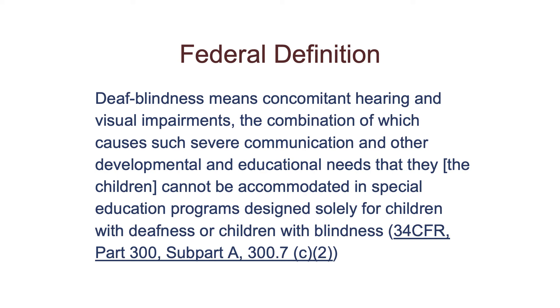The first thing we'll talk about is the federal definition for DeafBlind. DeafBlindness means concomitant hearing and visual impairments, the combination of which causes such severe communication and other developmental and educational needs that children cannot be accommodated in special education programs designed solely for children with deafness or children with blindness. The main point is that last part — the need for specialized instruction.